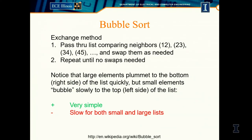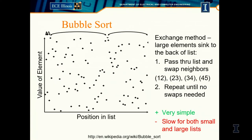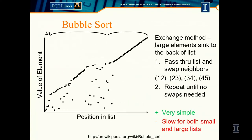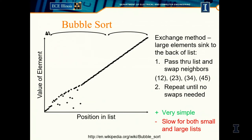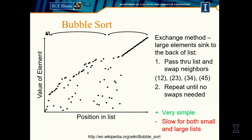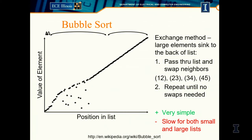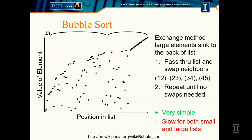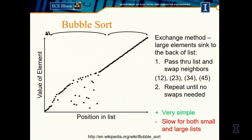You keep going down the list swapping, and once you get to the end you go back to the beginning and go through again. What happens is large elements plummet to the back of the list quickly — every time you go through, they keep pushing all the way down. The smaller elements slowly bubble up to the top. That's how it gets its name. In a single step, the biggest element gets put in the right spot, but each small element only moves one position per iteration.